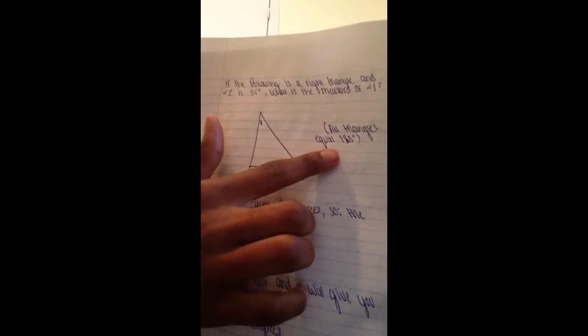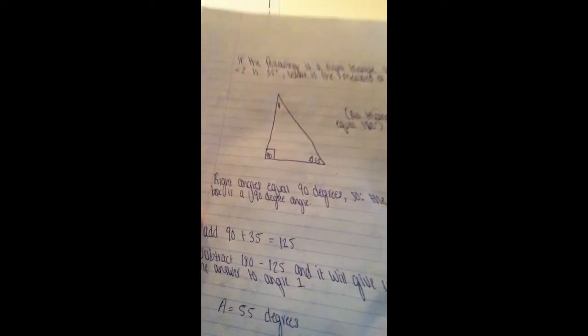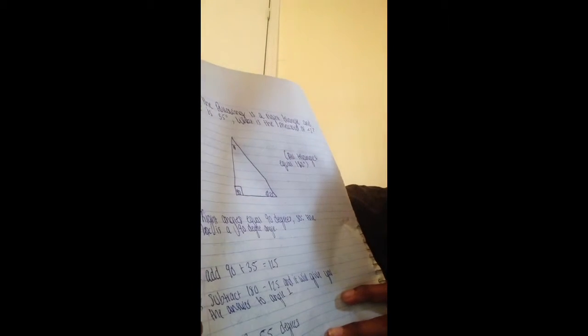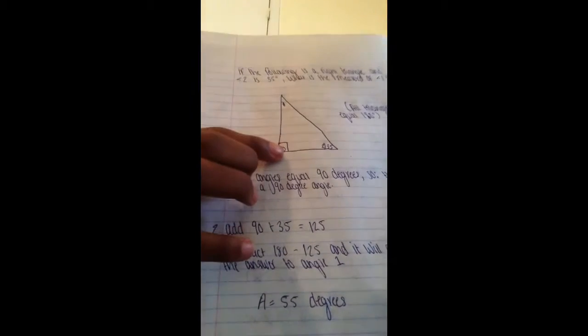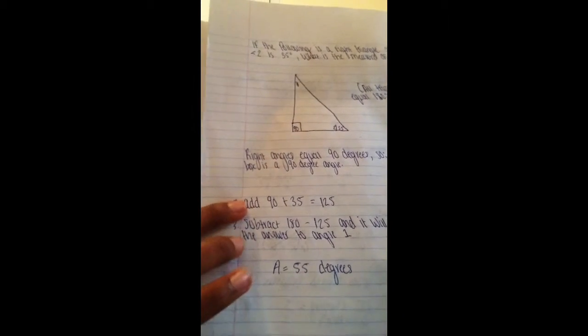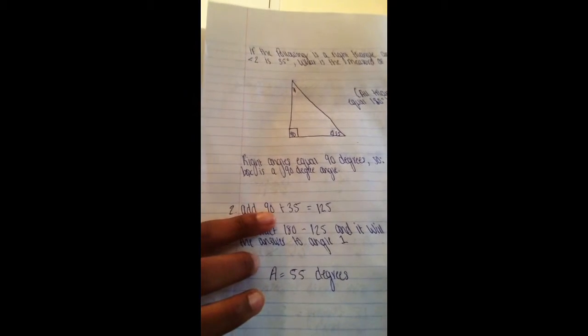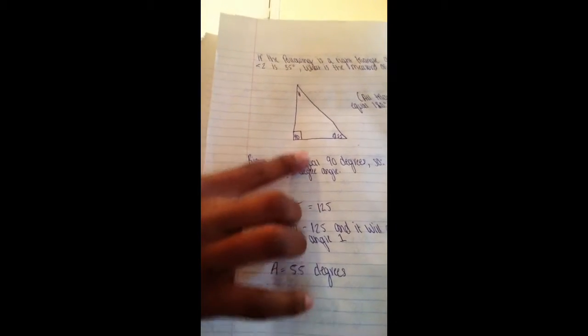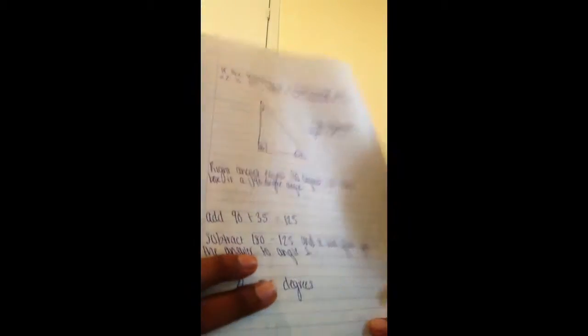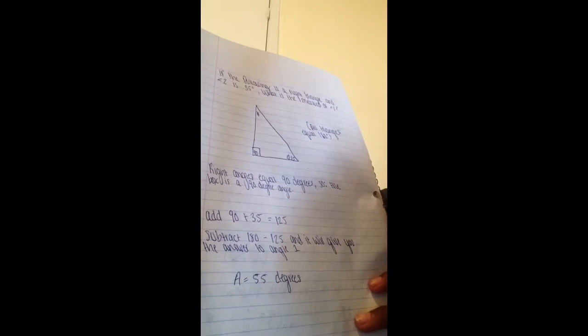So all triangles equal up to 180 degrees. The first thing you had to do was fill this spot in, the angle 2, so you can know. The second thing you do is add 90 plus 35 to see how much that is. How much you got. So 90 plus 35 equals 125. The third thing you do is subtract 180 take away 125, and it will give you the answer to the angle.